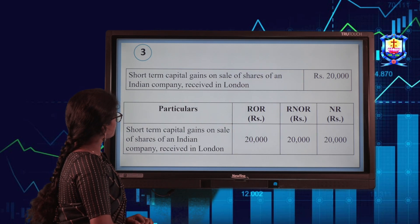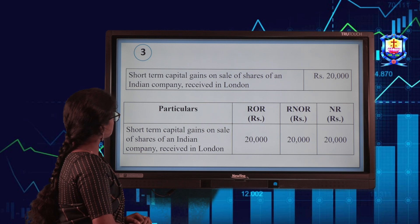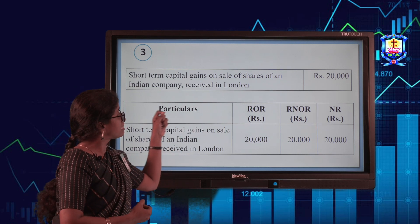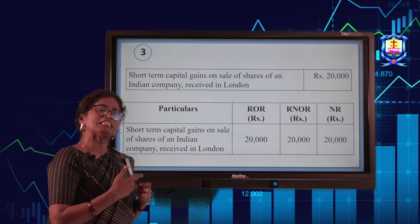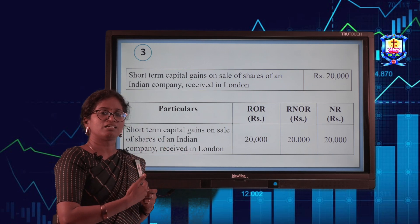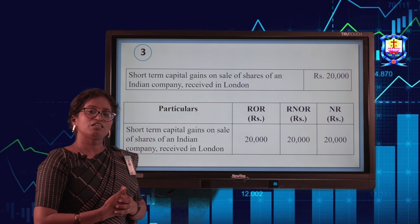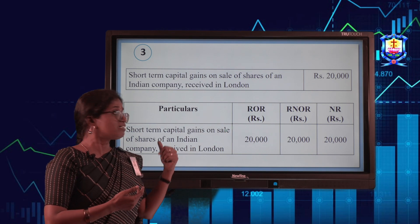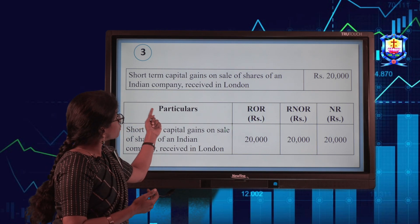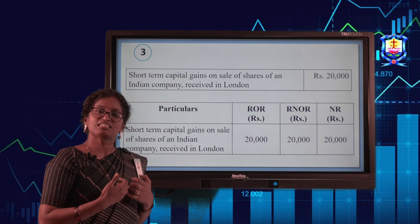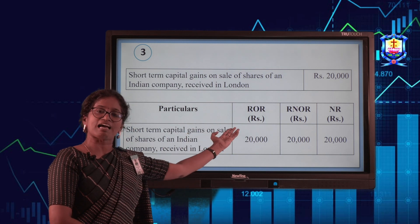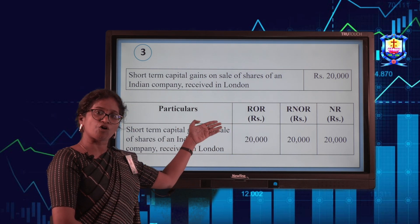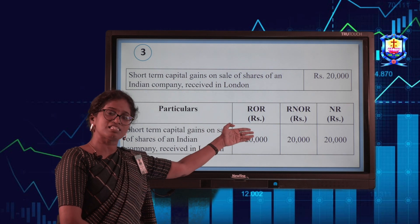Short-term capital gains on sale of shares of an Indian company, received in London. The source is from India because it involves an Indian company, even though the income was received in London. Checking the source principle: source is India, so it is Indian income and taxable for all taxpayers. So this 20,000 is taxable for ROR, RNOR, and non-resident.